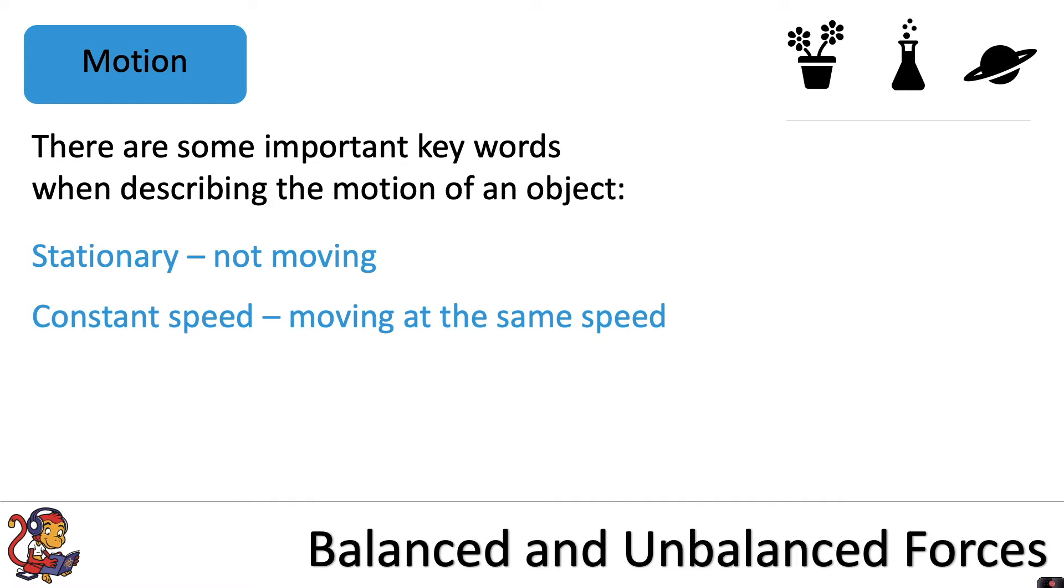Constant speed means it's moving at the same speed. Accelerating means it's speeding up, and decelerating means it's slowing down.